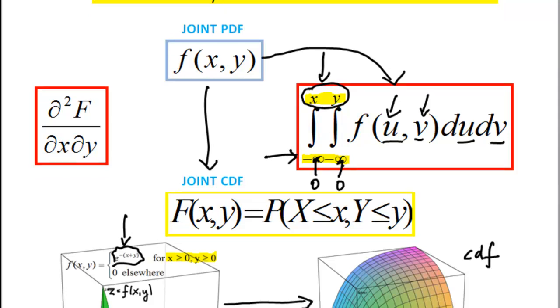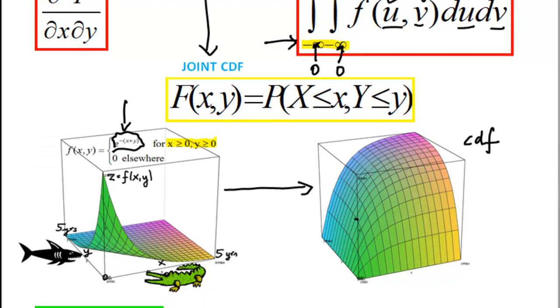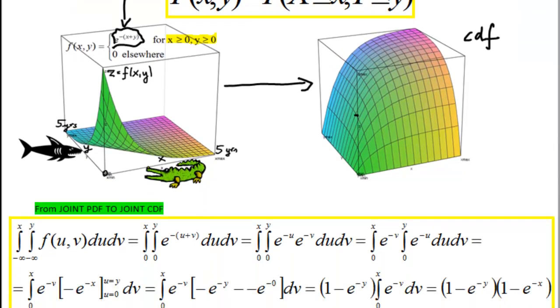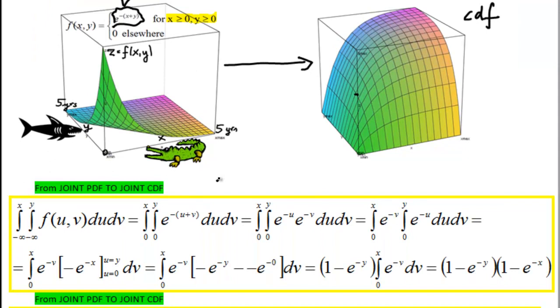So let's see how this is done. Yet again we come back to the same old exponential function e to the power of minus x plus y. So the first step to get from joint PDF to joint CDF, the first step we have to do is obviously change these variables and we replace this one with u and we replace y with v.